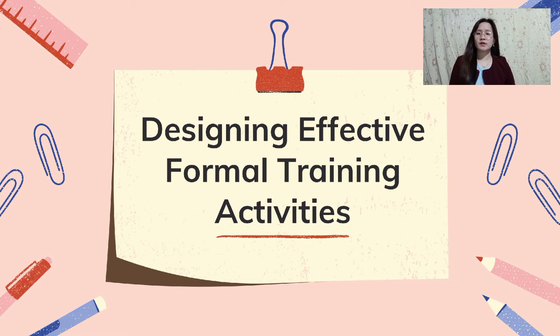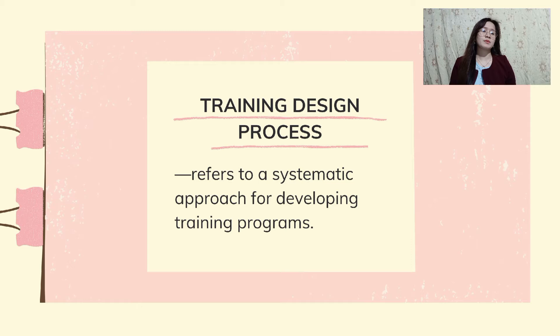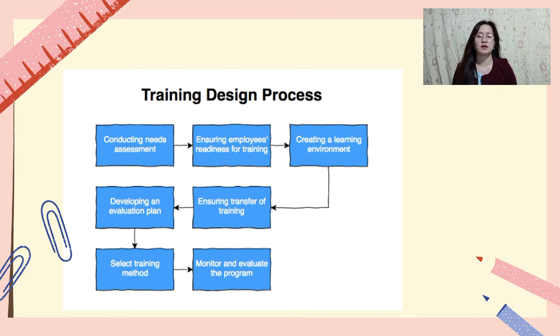Let us now proceed with designing effective formal training activities. The training design process comprises a series of steps that need to be followed systematically in order to have an efficient training program. Based on research, there are 7 steps in the training design process. Step 1 is needs assessment, which is necessary to identify whether training is needed. Step 2 is to ensure employees have the motivation and basic skills necessary to master the training content. Step 3 is to create a learning environment that has the features necessary for learning to occur.